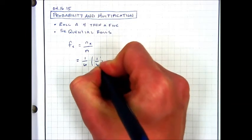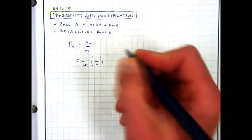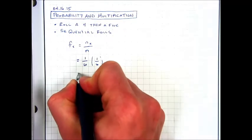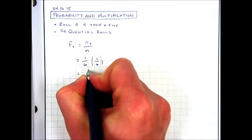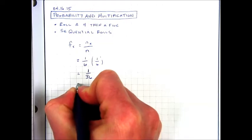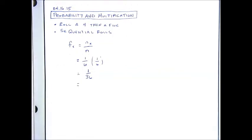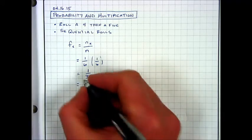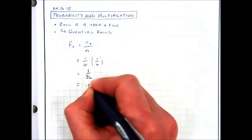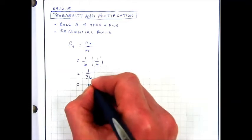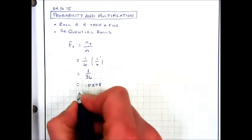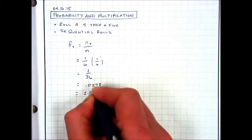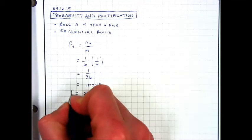It makes sense that these numbers would be multiplied together. 1/6 times 1/6 gives us 1/36, or about 0.0278, which is a 2.8% chance of that happening.